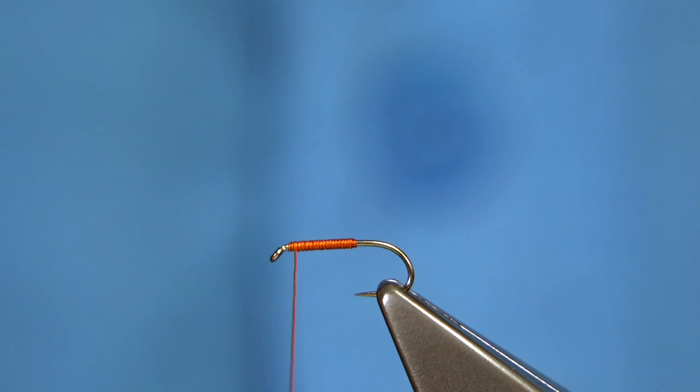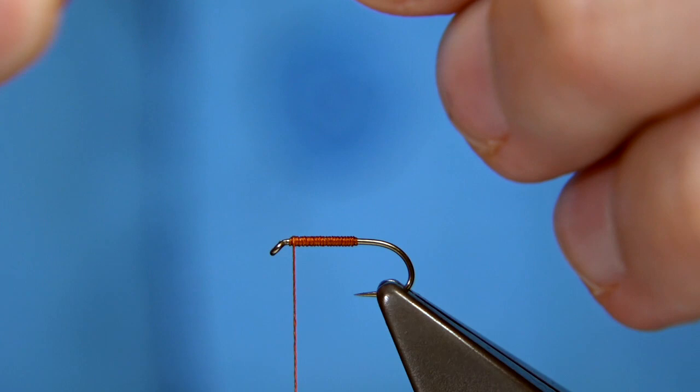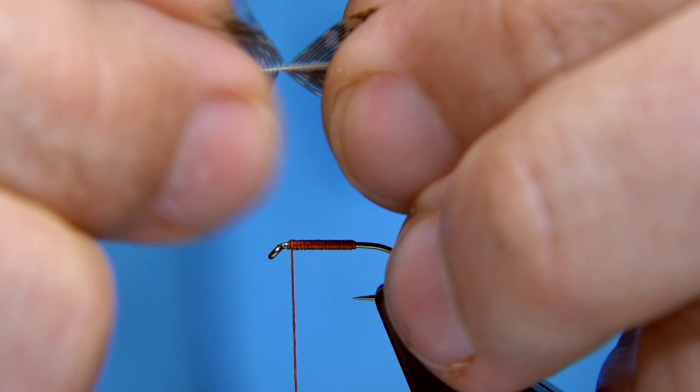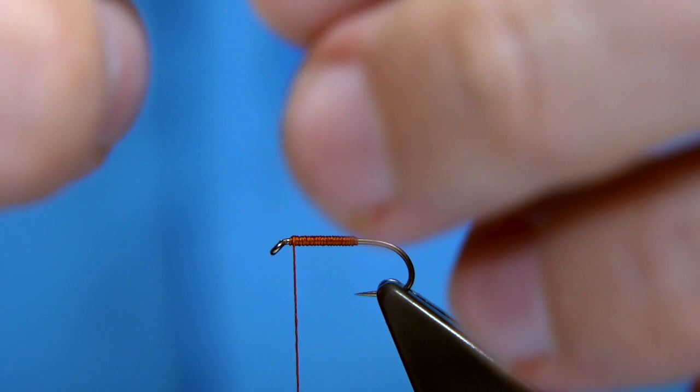Now partridge hackle, nice marked brown partridge. Just remove the fluff from the sides. The stem may break like that, most times it does that. Now what I'm going to do is I don't need all this. Take away what I don't need. And even that's probably a tad too much, but I'll leave it at the moment.